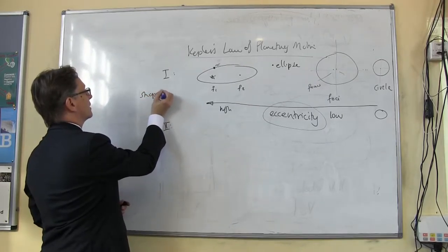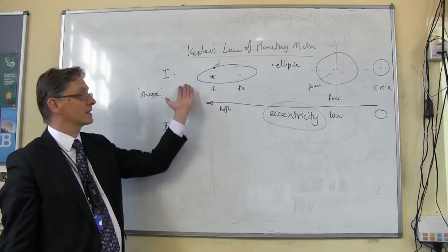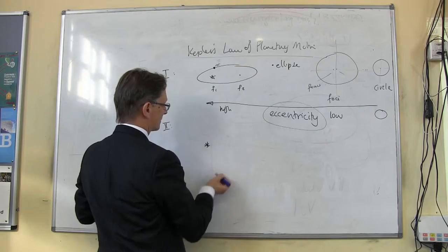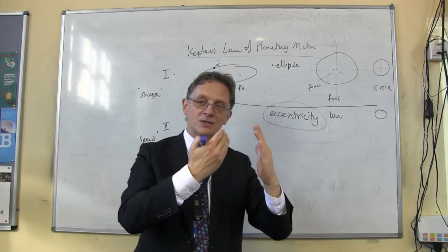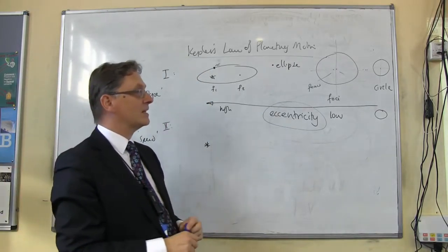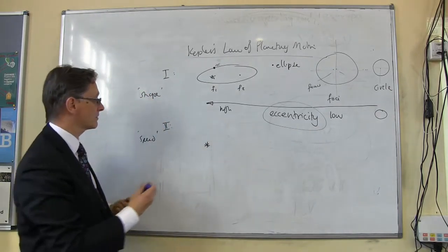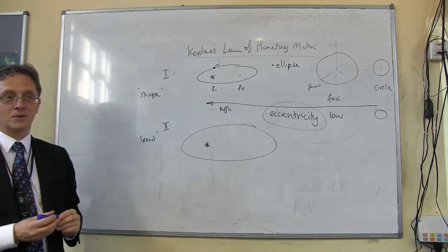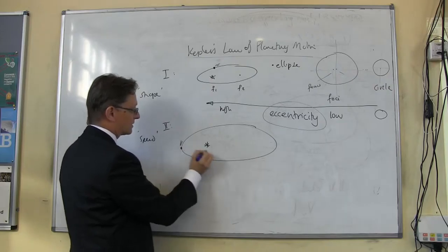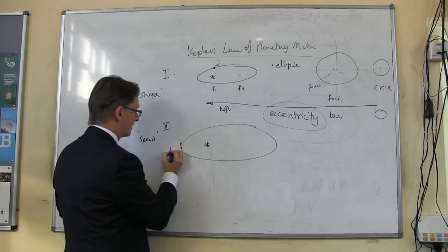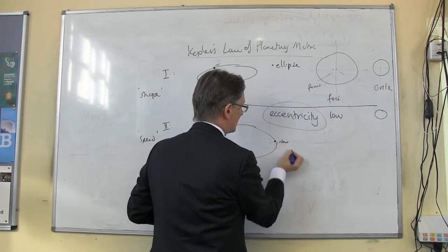Kepler's second law is to do with speed. An elliptical orbit means planets sometimes come closer to the Sun and are sometimes further away. The lunar eclipse the other night was particularly spectacular because the Moon happened to be quite close to the Earth in its slightly egg-shaped orbit, giving a larger Moon. The idea of Kepler's second law is very simple: when a planet is close to the Sun, the strength of gravity is quite strong, so it has to go very fast to avoid being pulled in.